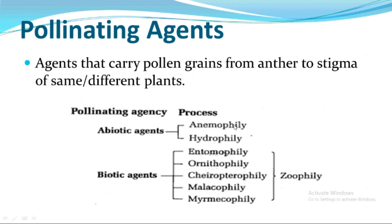In anemophily, there is pollination by air. Pollen grains which can be light-weighted are carried by air. Next is hydrophily, which means pollination through water. Then the biotic agents: entomophily means pollination by insects, ornithophily means pollination through birds, and chiropterophily means pollination through bats.